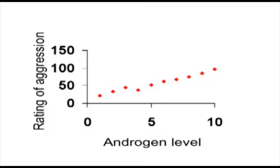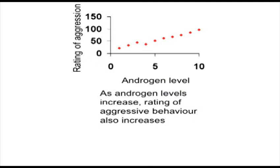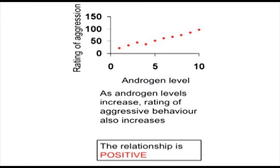Let's think about positive correlation. This figure is called a scatter plot, and it shows the rating of aggression and androgen levels measured in a group of individuals. Each one of those points is one individual. What we can see here is that they lie in an increasing straight line. So we can say that as androgen levels increase, rating of behaviour also increases. Because they lie in that positive straight line, we say that the relationship is positive.